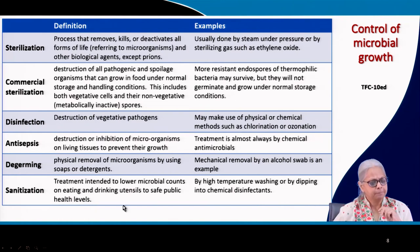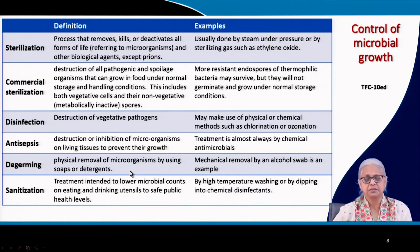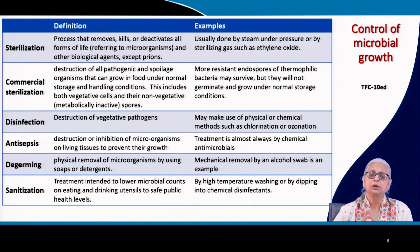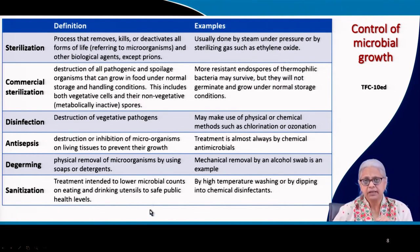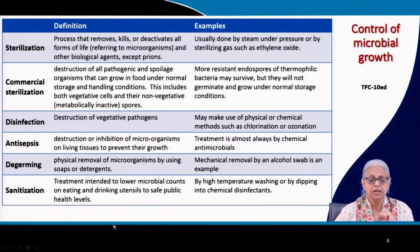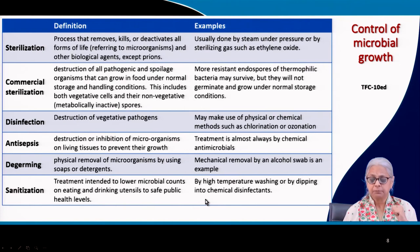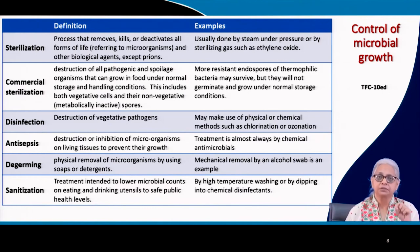Sanitization ensures that public places — door handles, desks, utensils used in public areas or at home — have a microbial count on surfaces as low as possible, close to zero. We use all kinds of sanitization methods. There can be several different chemical disinfectants used for sanitizing public or private spaces. High temperature washing is one method; dipping or wiping surfaces with chemical disinfectants is another.